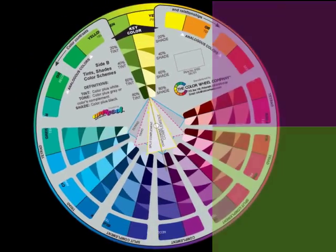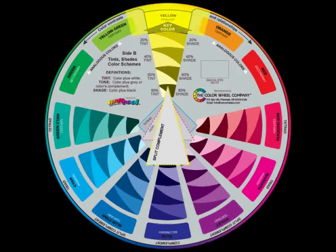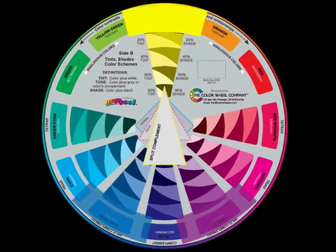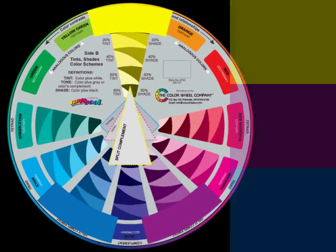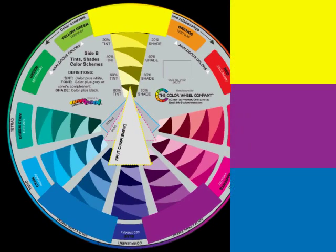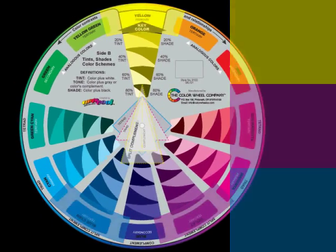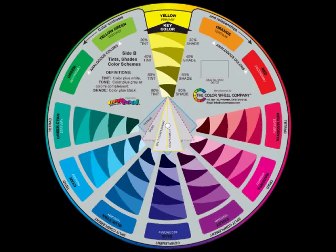A split complement consists of the key color and the two colors on either side of the complement. This combination of colors is quite vibrant, working well together.